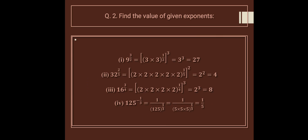3 into 3 raised to the power half means square root of 3 into 3, which is 3, then raised to power 3, giving 27. Next: 32 raised to the power 2 upon 5 — this is the 2/5th root of 32.